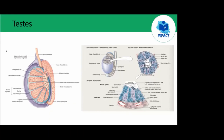By the time spermatocytes reach the luminal end of the Sertoli cells, they have undergone two meiotic divisions and are ready to become spermatids. The spermatids remain embedded in the apical membrane of the Sertoli cells while they complete transformation into sperm — losing most of their cytoplasm and developing a flagellated tail for motility to help fertilize the egg. The chromatin of the nucleus condenses into a dense structure filling most of the sperm head, while a lysosome-like vesicle called the acrosome forms as a cap over the tip of the nucleus. The acrosome contains enzymes necessary to facilitate fertilization when sperm contacts the egg. Mitochondria within the mid piece of the sperm body produce energy for motility.